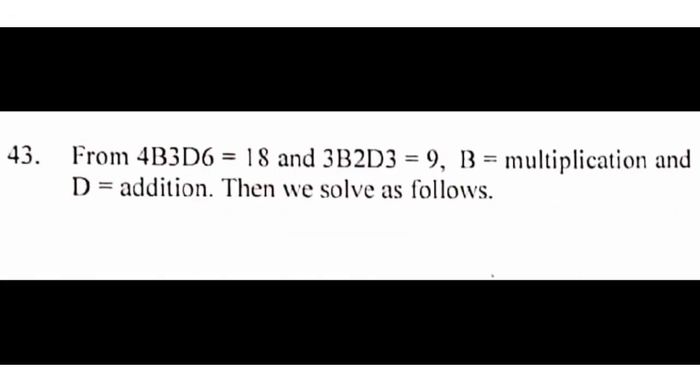Now, how that 4b3d6 is equal to 18, 3b2d3 is equal to 6, then b is multiplication, while d is addition. Then, we'll solve as follows. So, whenever you see this kind of question, you should determine, look at it critically, and use your signs, addition, multiplication, subtraction, and work it out, and see the one that best suits. That's the one that you're going to use and solve the question.